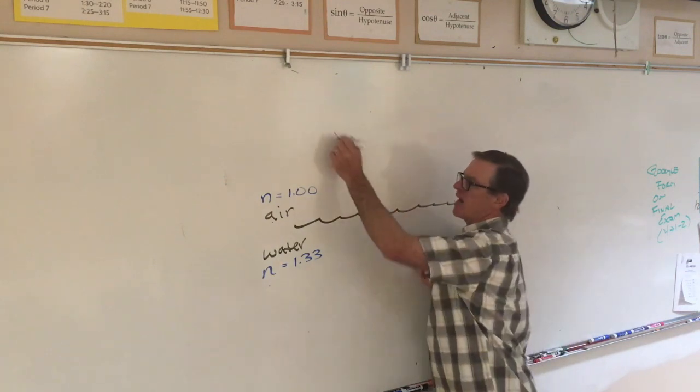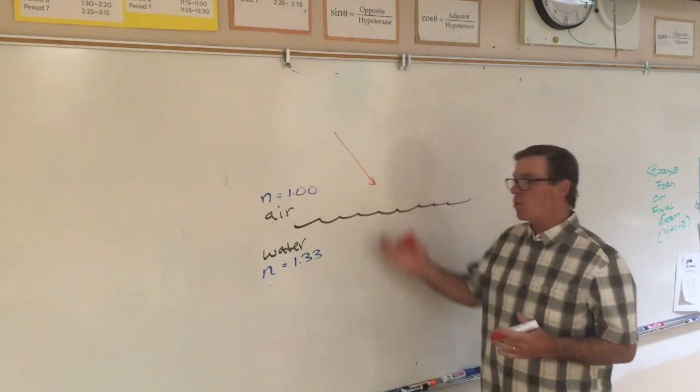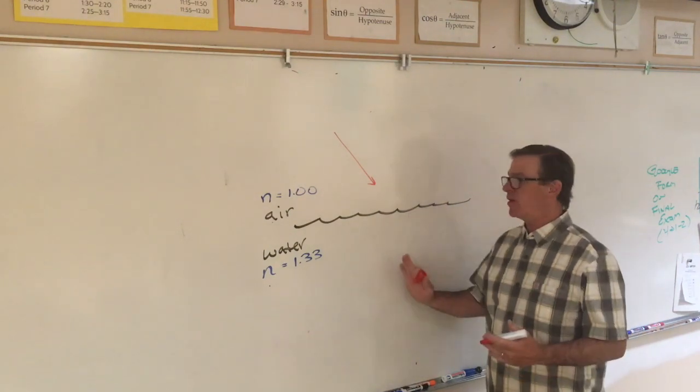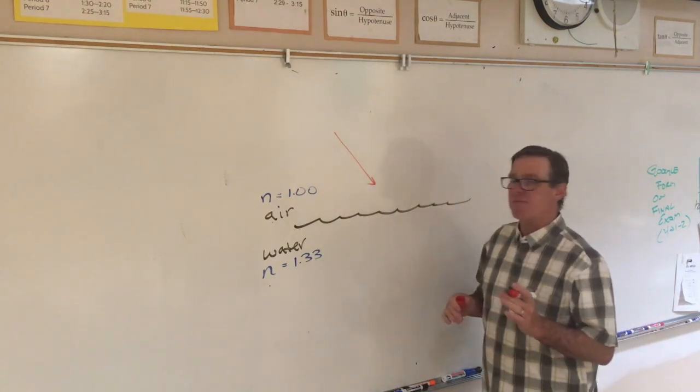Imagine light is traveling in air, and it reaches an air-water interface. Turns out, it bends when it enters the water. Now some of the light may be reflected, we're going to ignore that for the moment.